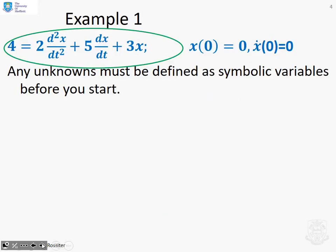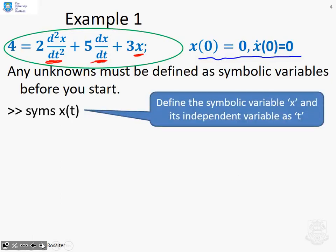First example then. You can see our differential equation at the top: 4 = 2 d²x/dt² + 5 dx/dt + 3x, and again we've got a couple of initial conditions. Now the first thing you've got to do is define any unknowns as symbolic variables. The unknowns that we've got here are going to be the second derivative, the first derivative, and x. So we define a symbolic variable x(t), and you'll notice here the particular notation where you use x(t), and that also defines the independent variable as t.